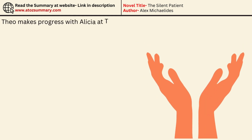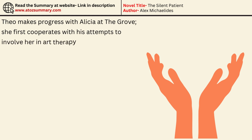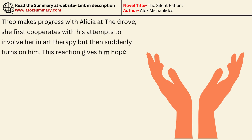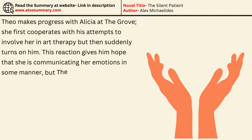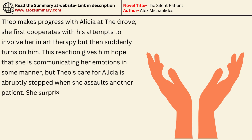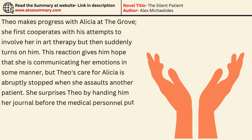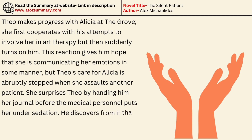Theo makes progress with Alicia at the Grove — she first cooperates with his attempts to involve her in art therapy but then suddenly turns on him. This reaction gives him hope that she is communicating her emotions in some manner, but Theo's care for Alicia is abruptly stopped when she assaults another patient. She surprises Theo by handing him her journal before the medical personnel puts her under sedation.